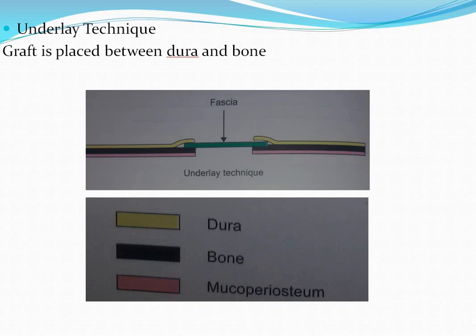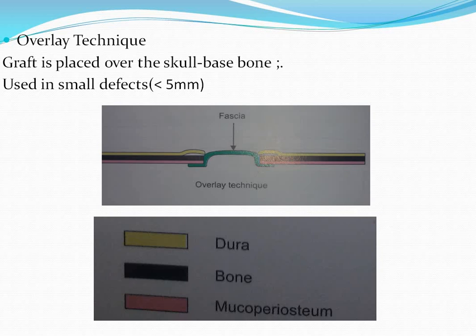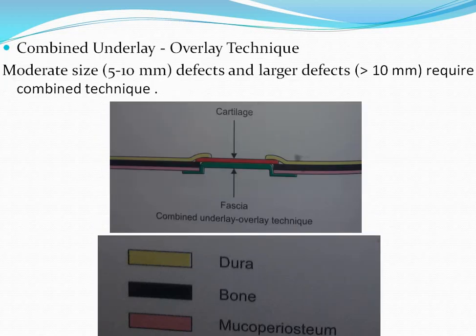In the underlay technique, the graft is placed between the dura and the bone. In the overlay technique, the graft is placed over the skull base bone; it is used for small defects less than 5 mm. The combination of underlay and overlay technique is used for moderate size defects of 5–10 mm, and larger than 10 mm defects require the combined technique. In this technique, cartilage is placed between the dura and the bone, while the other graft — fascia — is placed over it like an overlay.